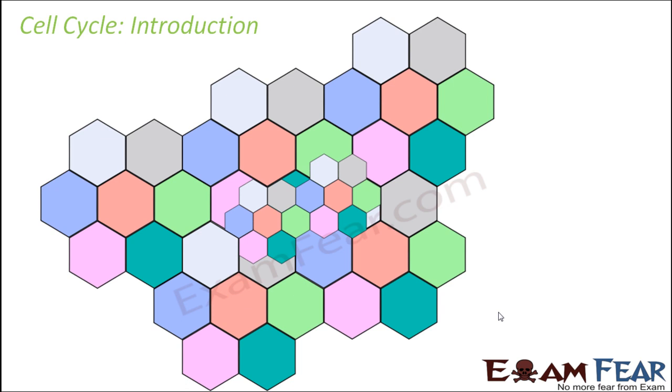So now that we know what is cell division, let me introduce you to the cell cycle. Cell cycle will talk about the entire life cycle of a cell. So how a cell is formed, what does it do throughout its life and then how it divides. So that would be the entire life cycle of a cell.